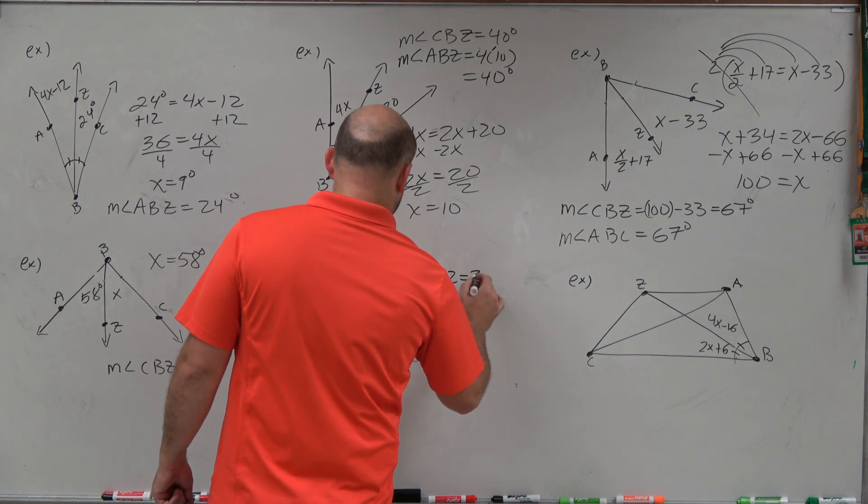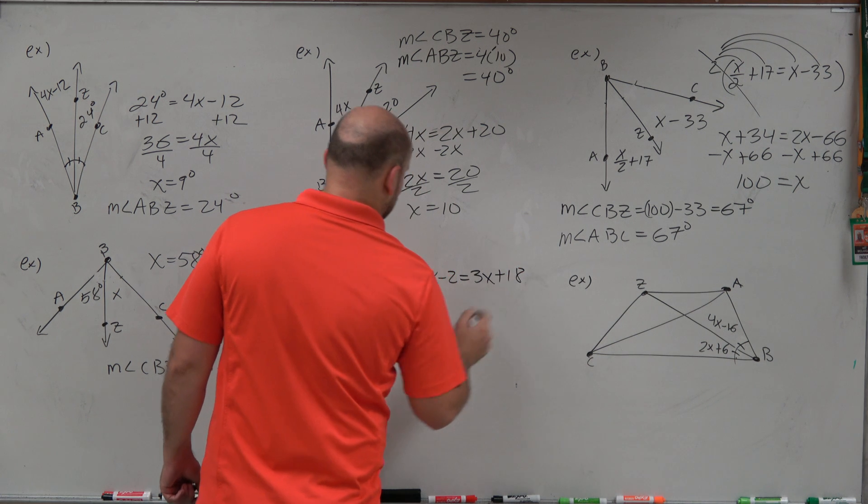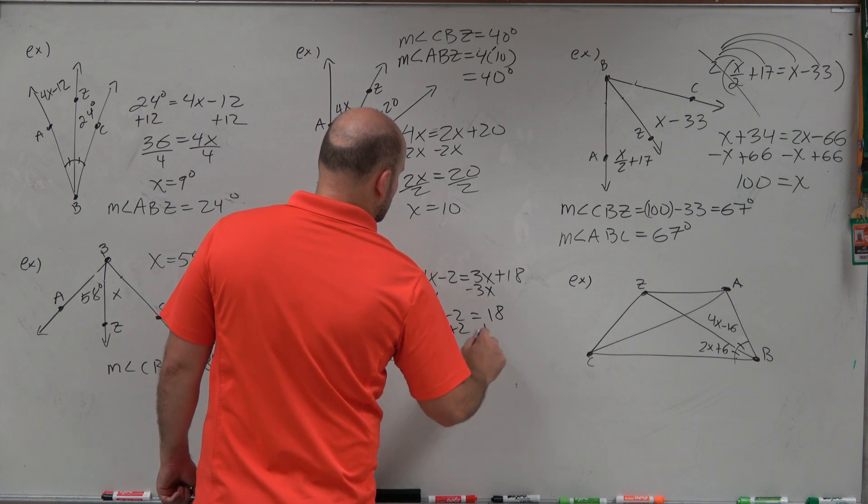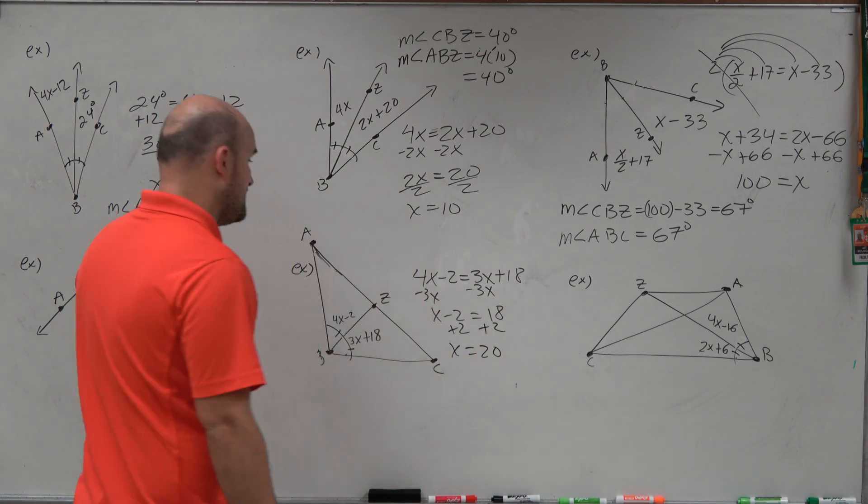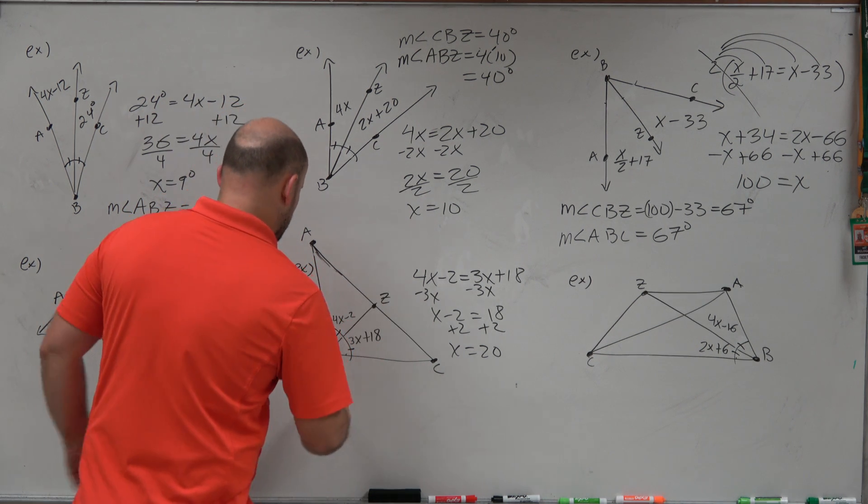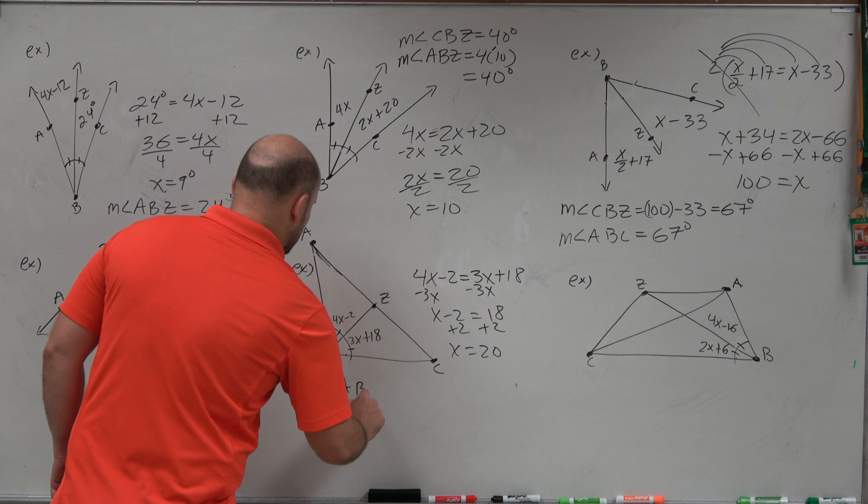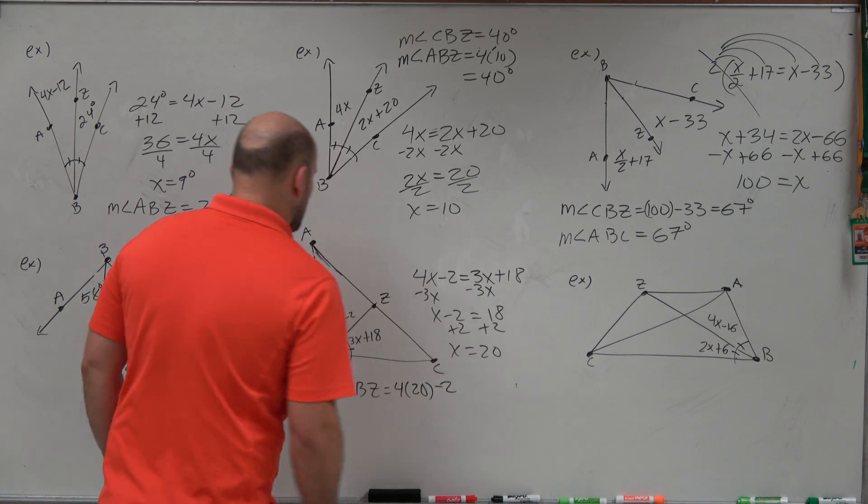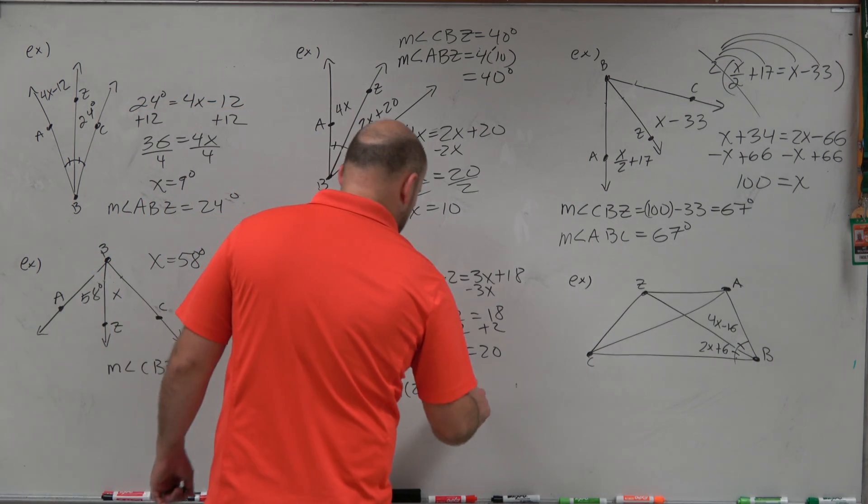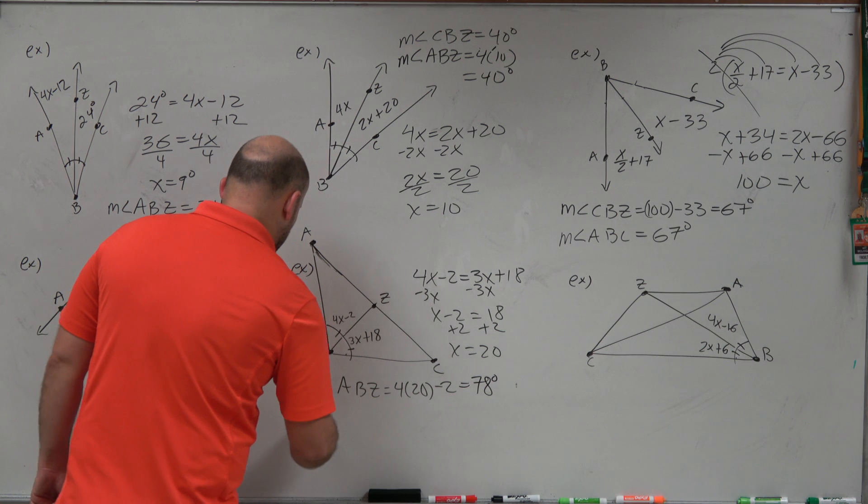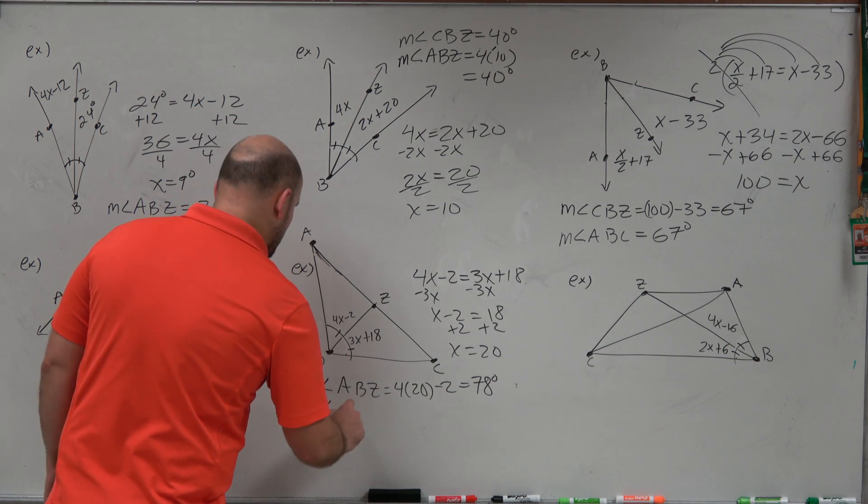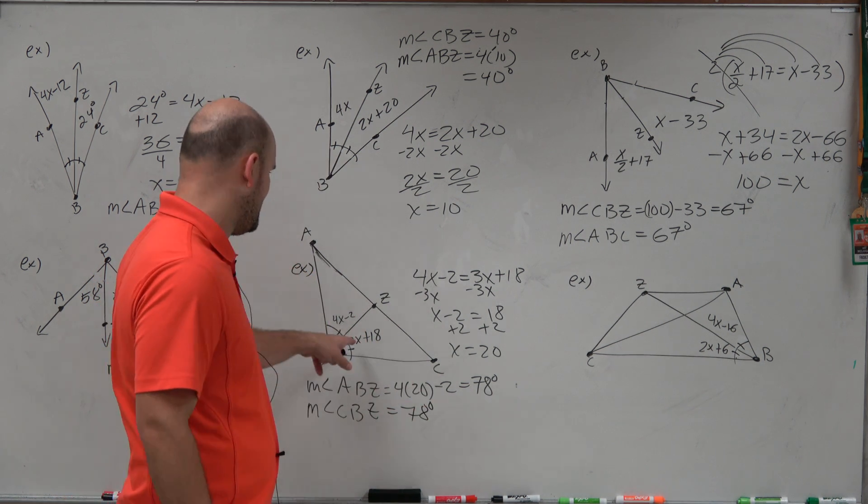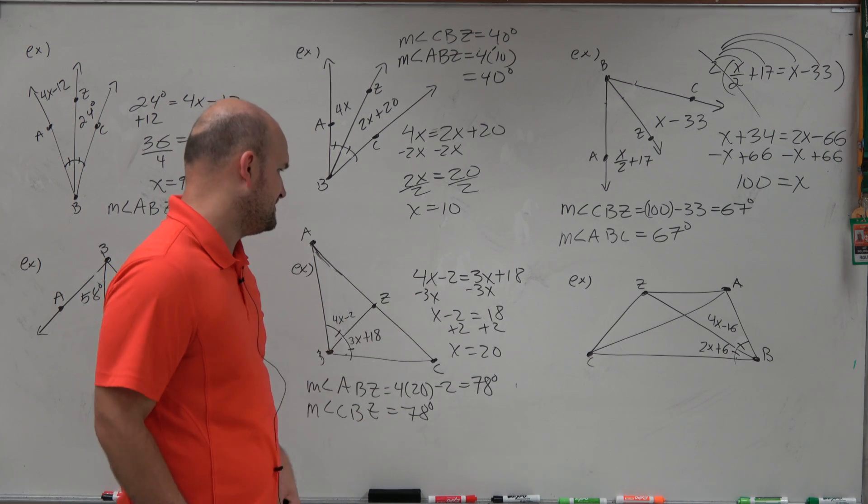So in this case, I have 4x minus 2 equals 3x plus 18. Go ahead and solve. So I subtract 3x on both sides. x minus 2 equals 18. Add 2, add 2, x equals 20. Again, you can plug it into any one. I'll plug it into this one. So measure of angle ABZ is equal to 4 times 20 minus 2. 4 times 20 is 80. Minus 2 equals 78 degrees. So therefore, if one is 78 degrees, that means I know that my other angle, CBZ is also equal to 78 degrees. And I can just double check that. 3 times 20 is going to be 60 plus 18 is 78 degrees. Perfect.